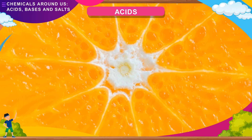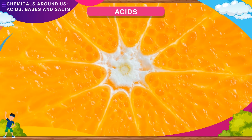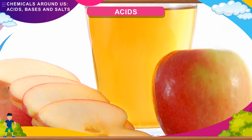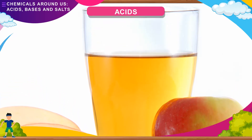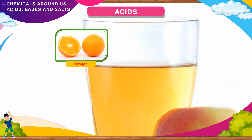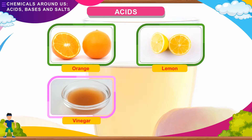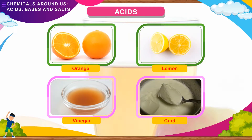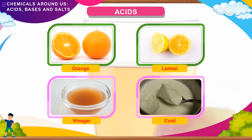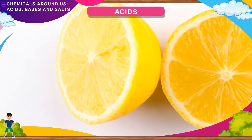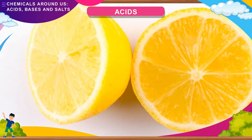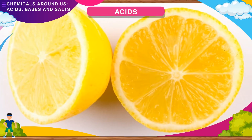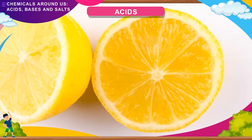What are acids? Anything that tastes sour is said to contain acids. They may be present in the food we eat. Orange, lemon, vinegar, and curd are some food items that contain acids. Orange and lemon contain citric acid. Vinegar contains acetic acid. Curd contains lactic acid.